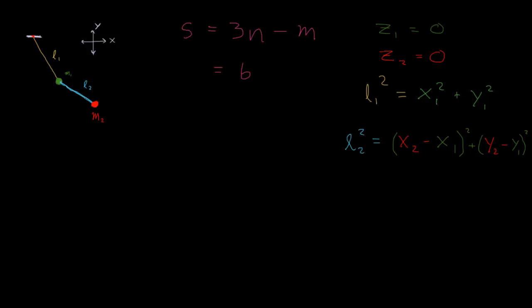Now if we count our equations of constraint, we have four of them—two saying that the motion is only in the xy plane, and two saying that this mass is a fixed distance from the origin and that the two masses are a fixed distance from each other. So there are four equations of constraints, 6 minus 4, so we should have two degrees of freedom or two generalized coordinates.